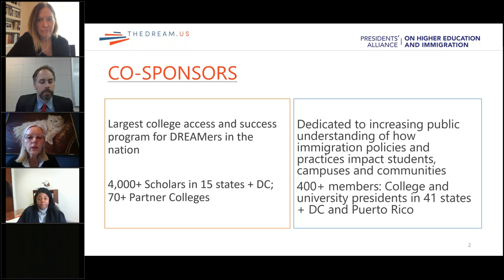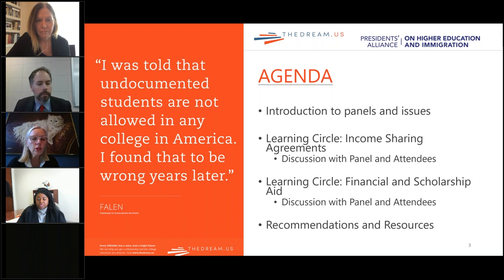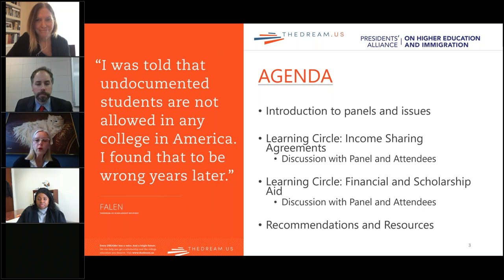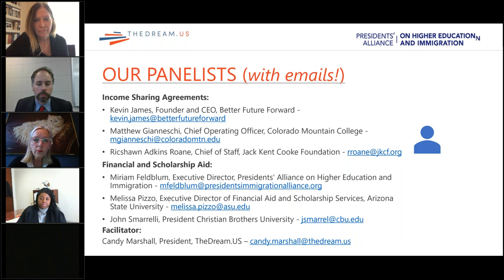Today's session is in two parts. The first learning circle is on income sharing agreements, which is an emerging new pay-it-forward model to help students pay for college. The second session is on financial and scholarship aid for DREAMers. We have much to cover and are going to move at a fast clip. We are fortunate to have six presenters who will share their journeys in addressing financial barriers facing undocumented immigrant youth. Their names and email addresses are listed here, and all have agreed you are welcome to reach out after this session.